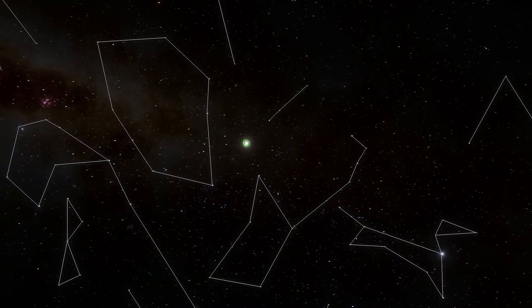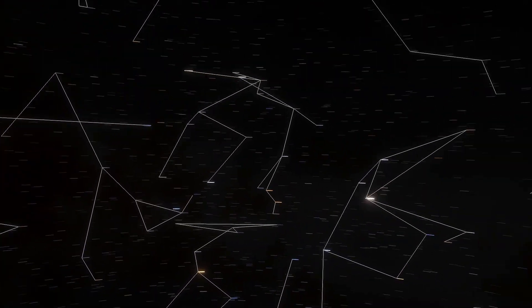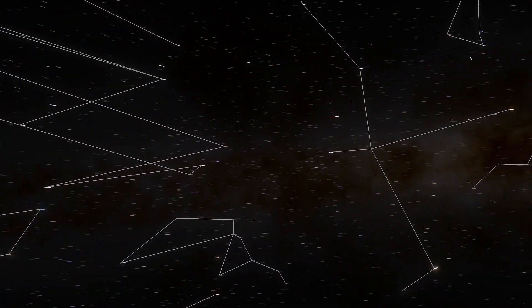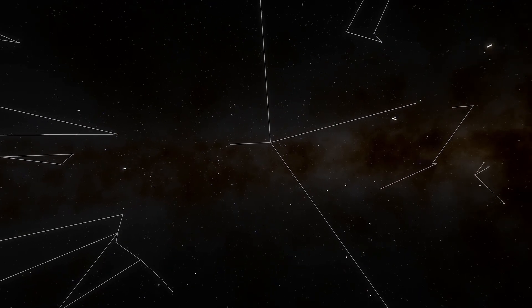As we venture forth, note how the asterisms, the stick figures of the constellations, distort with our changing perspective on the stars at each vertex.